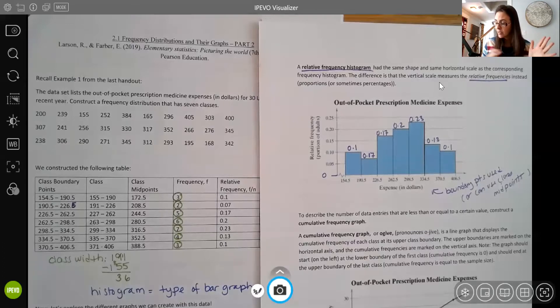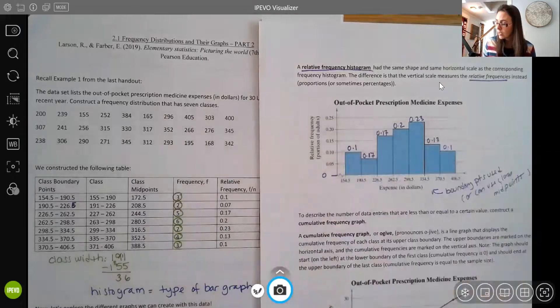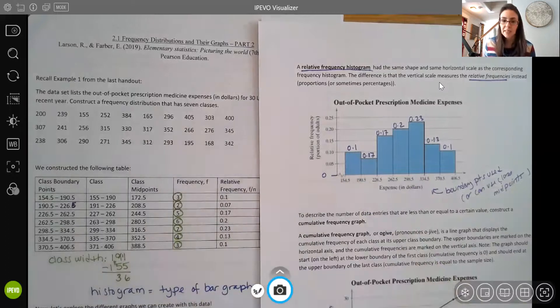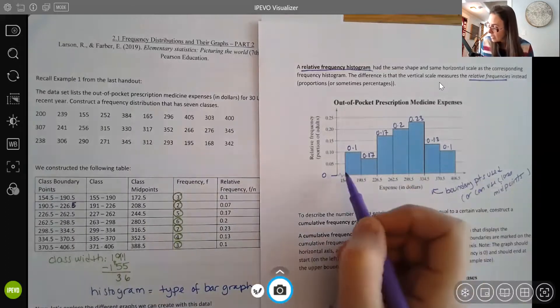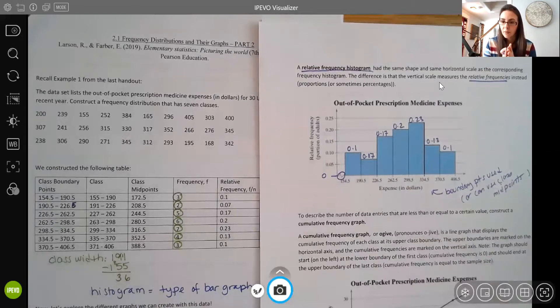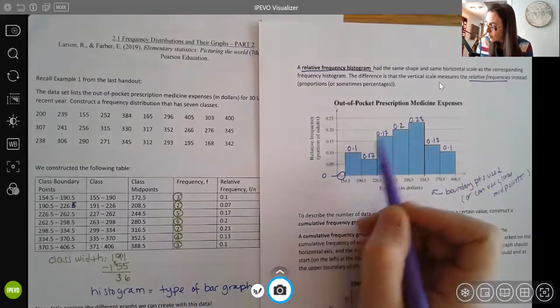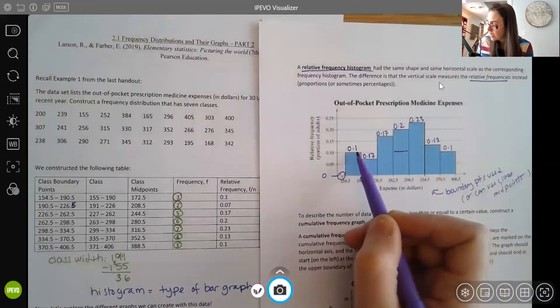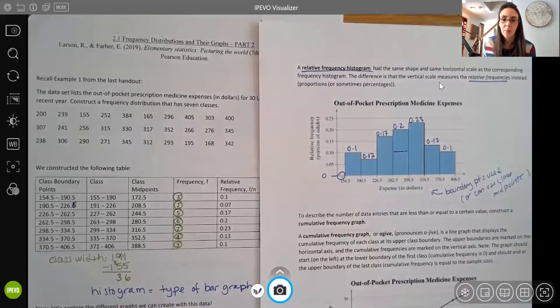But it works the same way. Everything else kind of still falls in line. Bars should still be touching. You can use either boundary points or midpoints if you want. We should still start at zero. If you are truncating, you can still put that little symbol in to show that you're cutting off on that horizontal axis the first 154 values. But otherwise, it's the same. The proportions are still correct. 0.2 is twice the size of 0.1, so you're still getting those nice proportions.